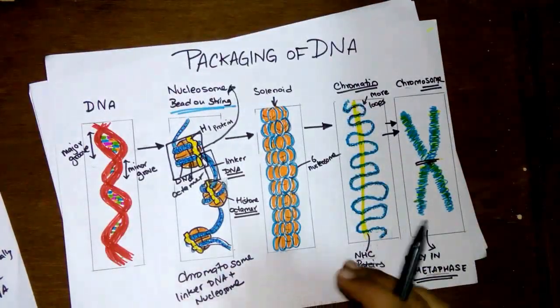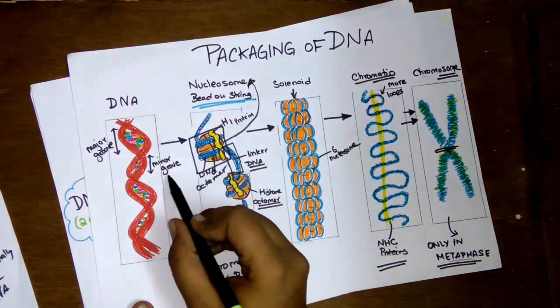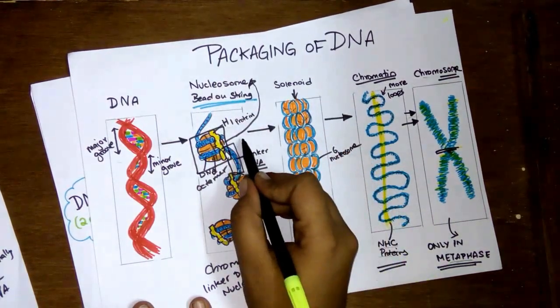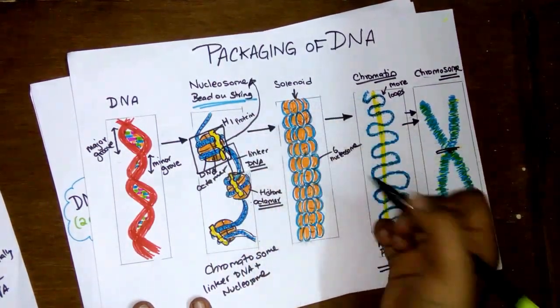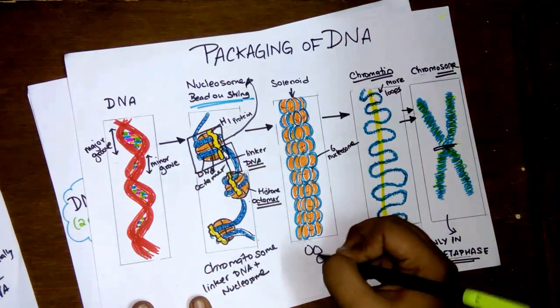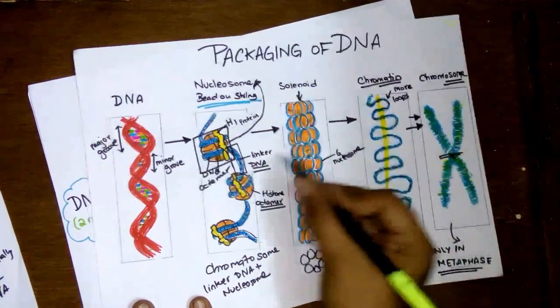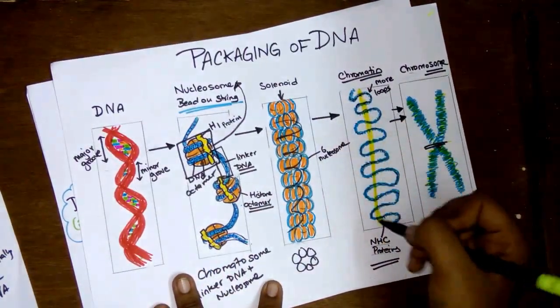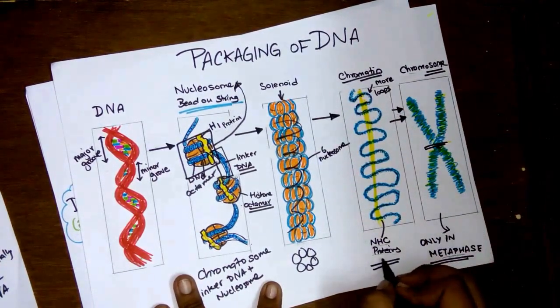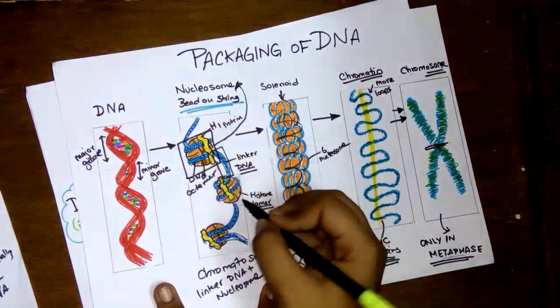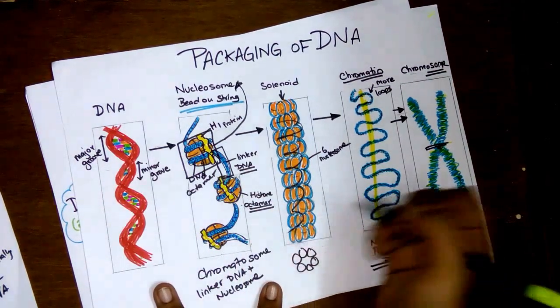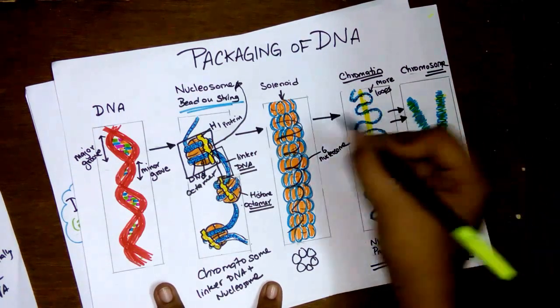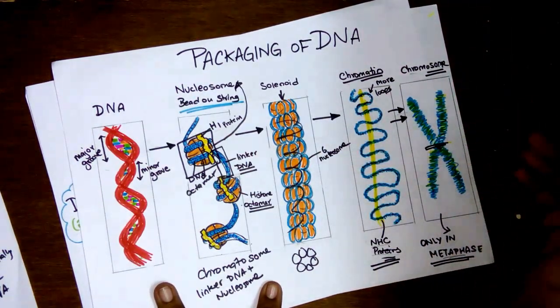To look at an overview again, the DNA undergoes the first type of packaging which forms the bead on the string model or the nucleosomes. It goes under more packaging which forms the solenoid, which is six of the nucleosomes joined together forming a spiral. This forms loops to form chromatin with the non-histone proteins, and eventually when you're ready for reproduction the DNA packages into a more denser form which is the chromosome.